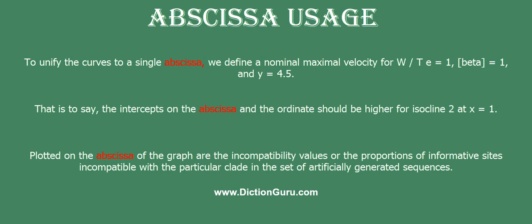To unify the curves to a single abscissa, we define a nominal maximal velocity for w, t equals 1, beta equals 1, and y equals 4.5.